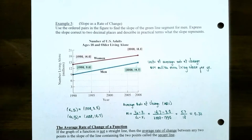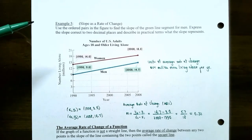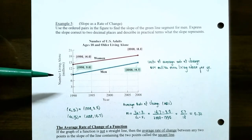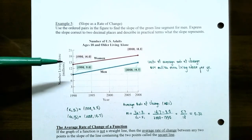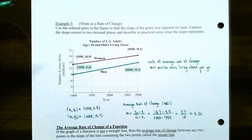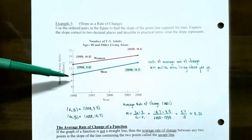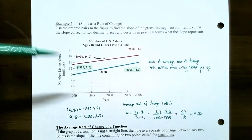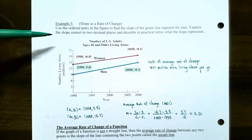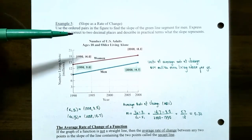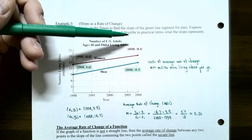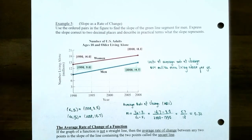Let's go back to the example from the last video. We have two ordered pairs identified on each line segment representing the number of United States adults aged 18 or older living alone, by women and men. We're going to focus on the green line segment representing men. Express the slope correct to two decimal places, and then describe what this means in practical terms, keeping track of the units.